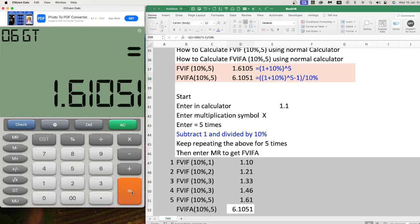Now subtract 1 from this, then divide by 10%. You will get the annuity factor.